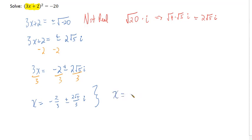x equals negative 2 thirds minus 2 root 5 thirds i, and x equals negative 2 thirds plus 2 root 5 thirds i.